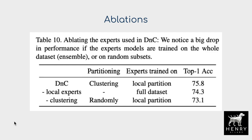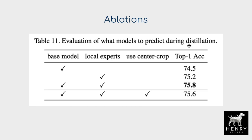Important ablations confirm that local partitions—not just ensemble or model bias regularization effects—drive the performance gain. Comparing training experts on the entire dataset versus random partitions versus k-means local partitions shows random partitions perform very poorly, while local k-means partitions yield the performance boost. Additionally, ablations on the knowledge distillation step examine the contribution of predicting the base model output R_B, the local expert targets, and the center-crop augmentation used in the feature encoder.